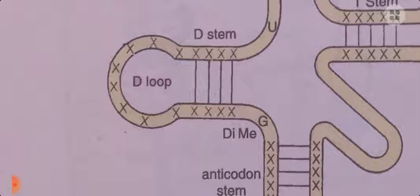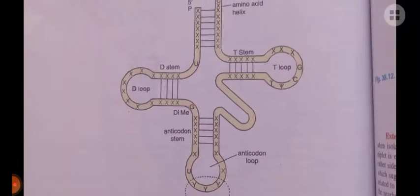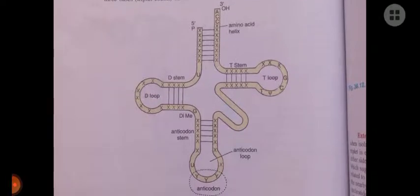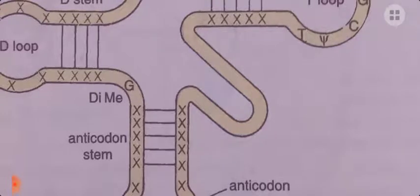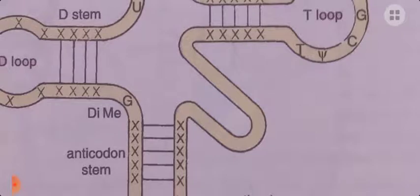We have now discussed the D-loop, T-loop, anticodon loop, and their respective stems, as well as the amino acid acceptor arm. The remaining loop-like structure present between the T-loop and the anticodon loop is called the variable arm or variable loop. This variable loop is lacking in some tRNAs and varies in its composition — we cannot perfectly identify how many base pairs or unpaired bases are involved in this loop.